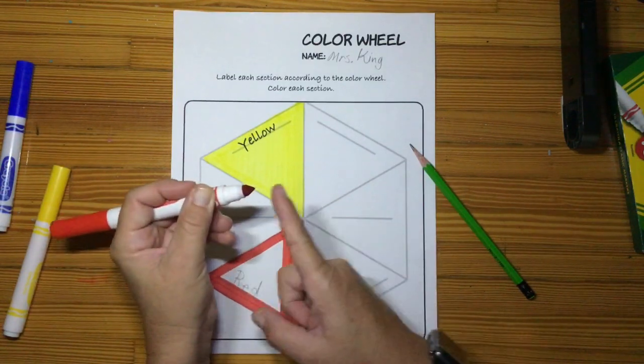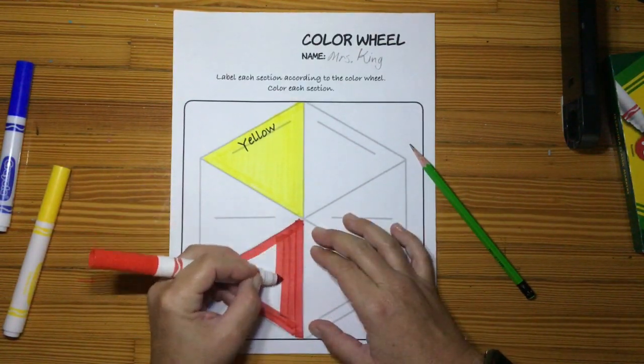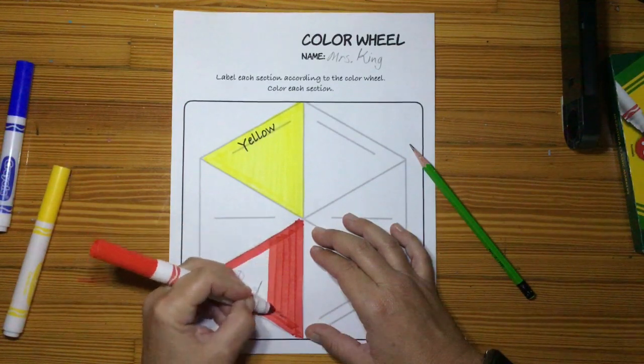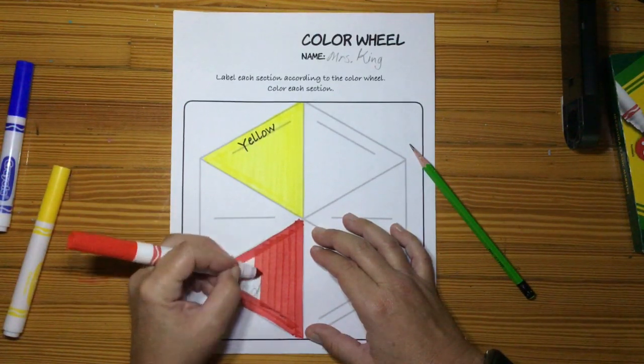You see how I'm using the side of my marker and not the point? This makes coloring go much faster.